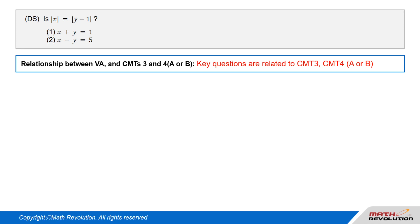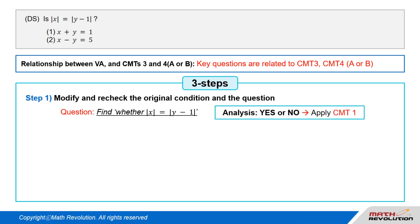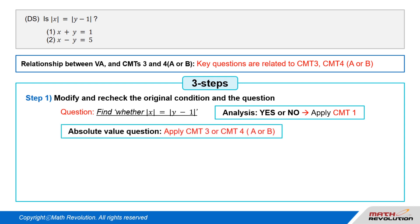Solution. We will solve this DS question using the variable approach. We examine the relationship between the variable approach method and common mistake types 3 and 4A or B. Follow the first step of the variable approach by modifying and rechecking the original condition and the question. This is an absolute value question, so we will apply CMT3 or 4A or B.